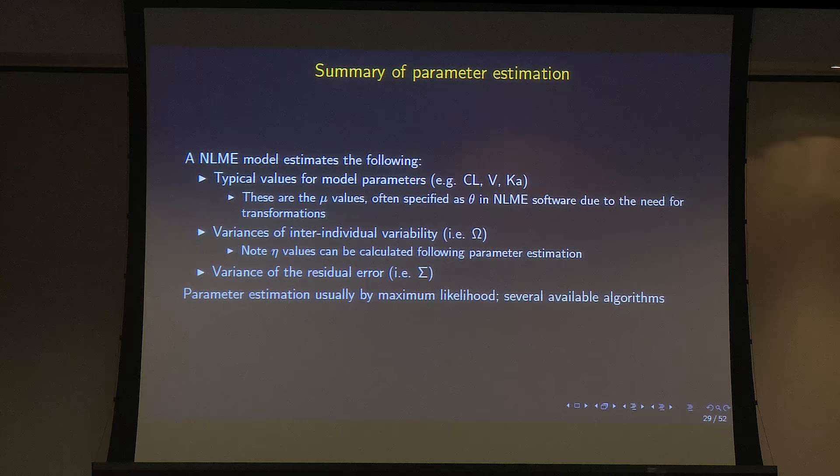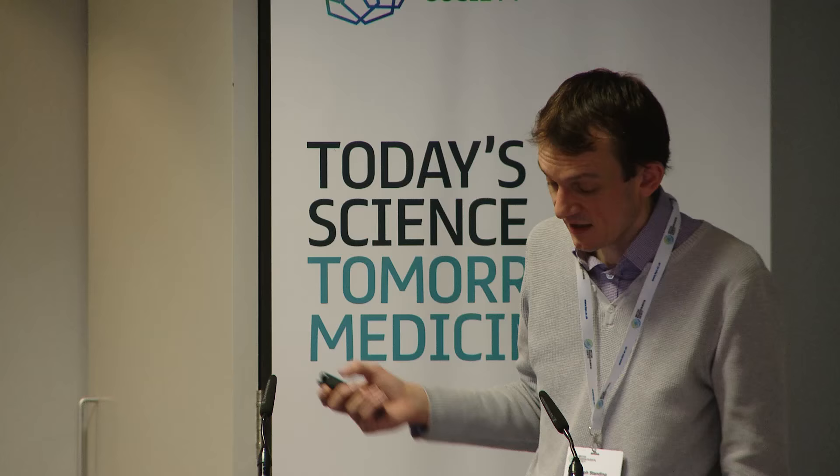At the end of a population non-linear mixed effects modelling approach, we have the typical values for the model parameters — population values of clearance, volume, Ka — sometimes called mu or theta in the software. We also have the variances at the level of the model parameters and variances of the residual error, estimated by maximum likelihood. Several algorithms and software packages are available to estimate those parameters.